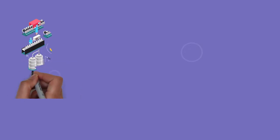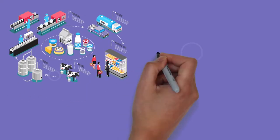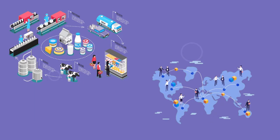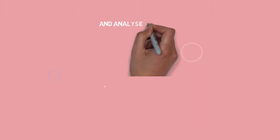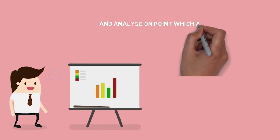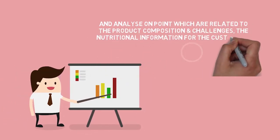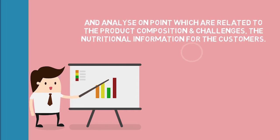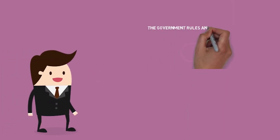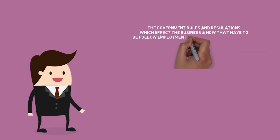Taking an example from the food industry and supply chain, you need to take examples from both the businesses which you initially selected for your P1 criteria and analyze points related to the economic stability, the product composition and the challenges, the nutritional information for the customers, and the government rules and regulations which affect the business and how they are to be followed.